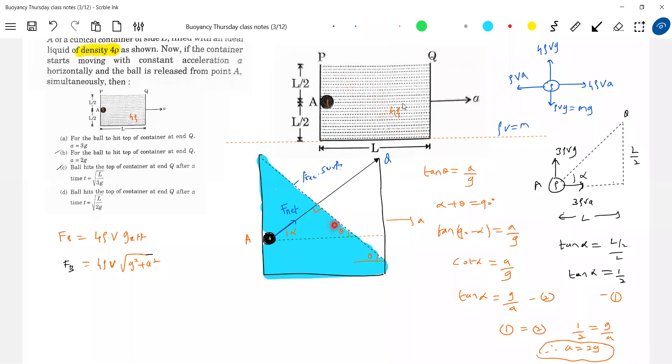So that tan theta what happened we can think in this way. And our ball hits top of container at end Q after a time. After what time it related? I think we know the distance. We know the distance, so what is the distance here? AQ. It should be equal to, what is the effective acceleration to reach there? We know acceleration is this much. What is the effective acceleration?